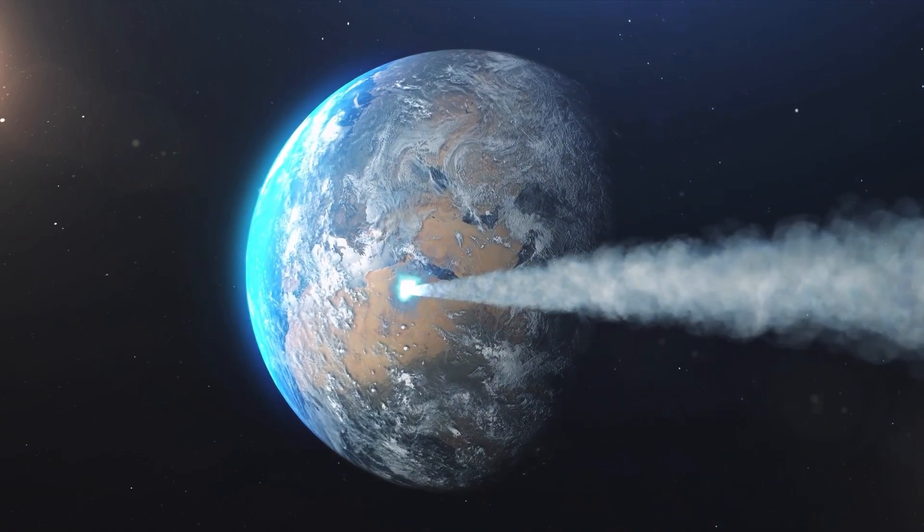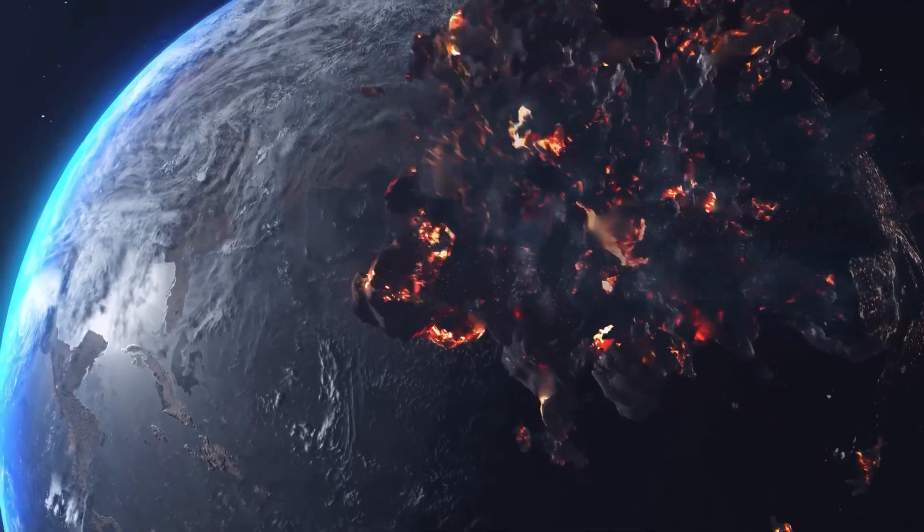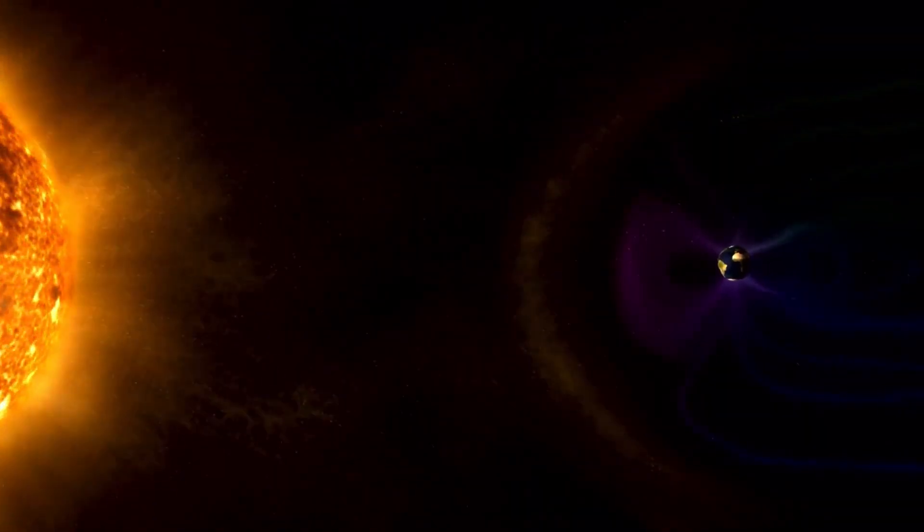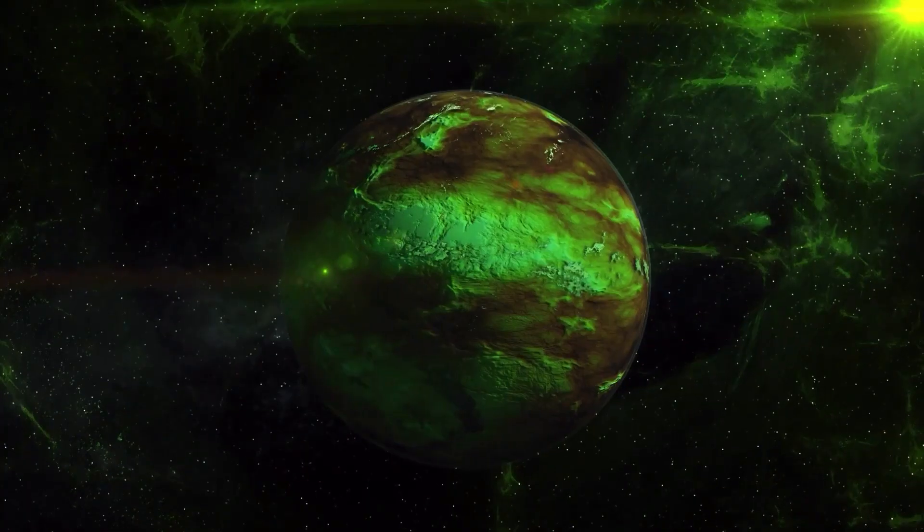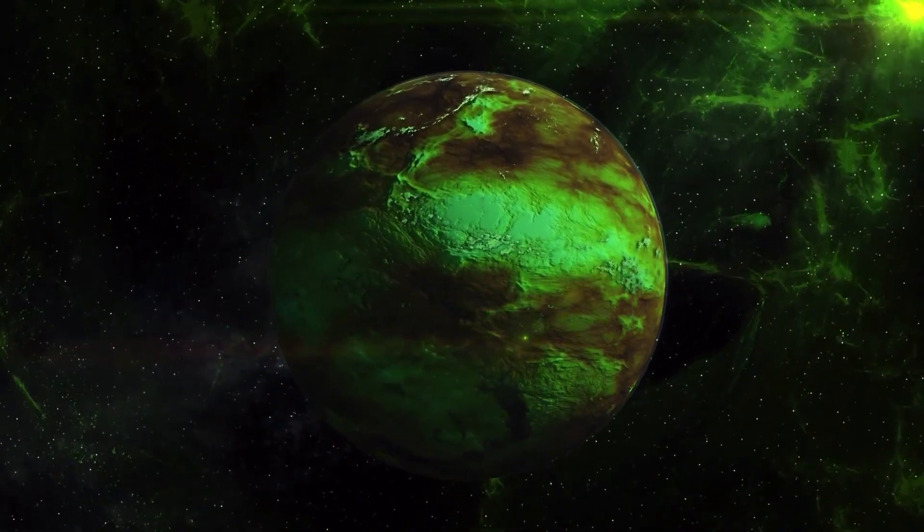These findings have significant implications for the Moon's evolution. We know that shortly after it formed, the Moon had a powerful magnetic field that began to decline about 3.2 billion years ago. Such a magnetic field is generated by motion and convection in the core.